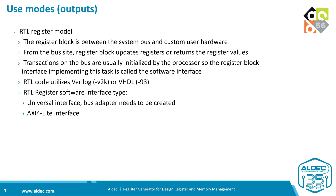The first kind of output file is the RTL register model, which sits between the system bus and custom user hardware. From the bus side, the register block updates registers or returns values to the bus. The generated RTL code utilizes Verilog 2001 or VHDL 1993, and both generated codes are fully synthesizable. The RTL register model can have two kinds of interface: the first is a very simple universal interface, and the second is the well-known AXI-4 Lite interface.